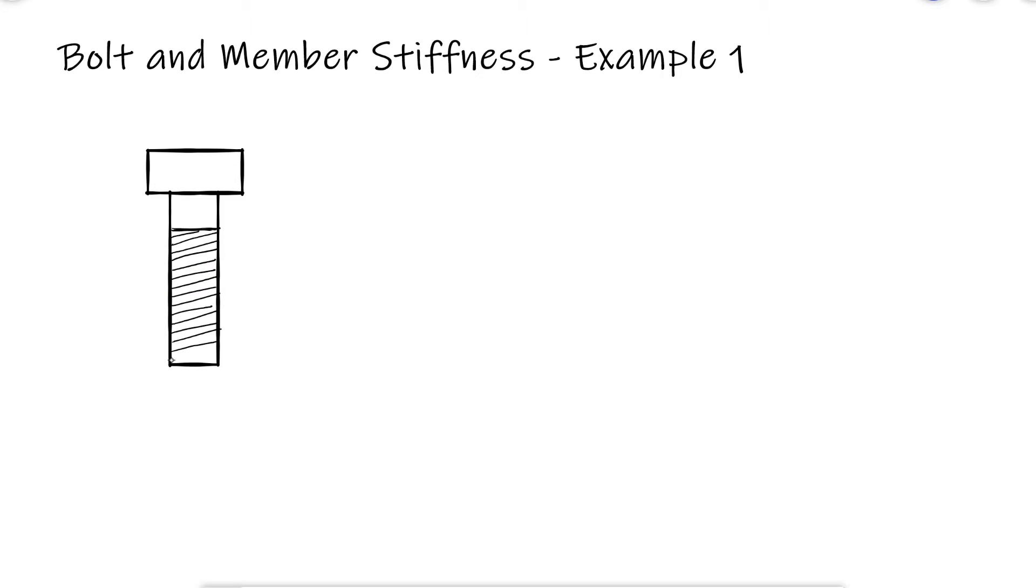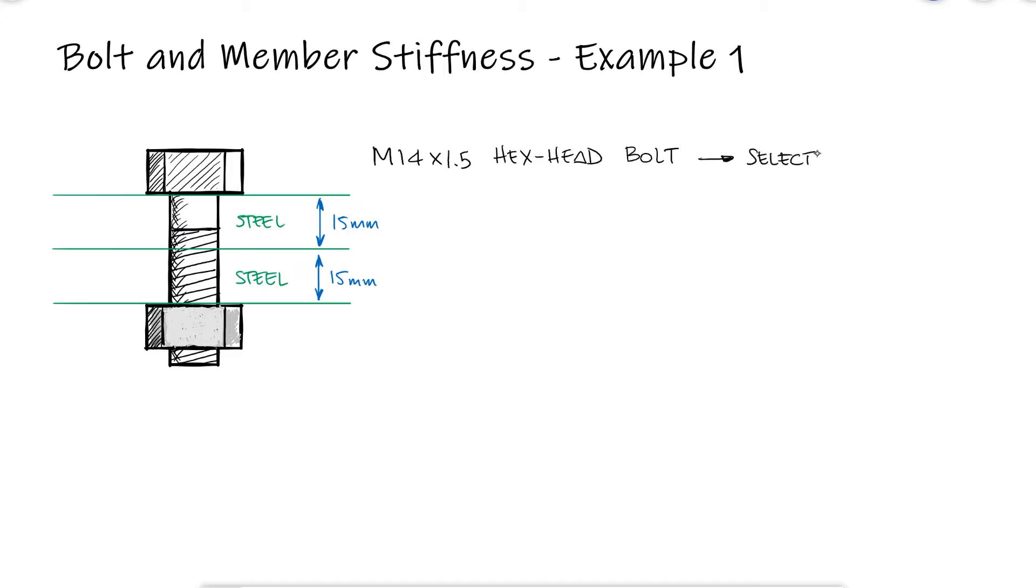A partially threaded M14x1.5 hex head bolt with a nut is used to clamp together two 15mm steel plates. Select the suitable bolt and nut and determine the bolt stiffness and the stiffness of the members. This is the first example for the bolt and member stiffness main video.